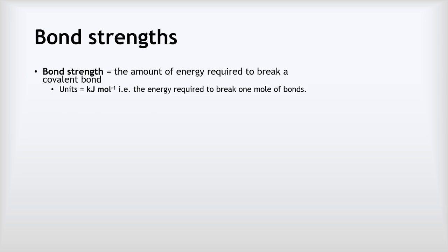So what is bond strength? Bond strength is the amount of energy required to break a covalent bond, and we usually give it in units of kilojoules per mole — i.e. the energy required to break one mole of the particular bonds that we're talking about.